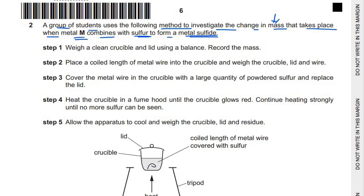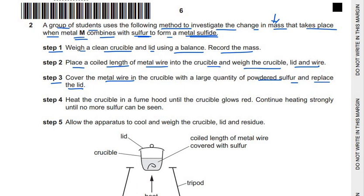Here are the procedure steps. Step 1: weigh a clean crucible and lid using a balance and record the mass. Step 2: place a coiled length of metal wire into the crucible and weigh the crucible, lid and wire. Step 3: cover the metal wire with a large quantity of powdered sulfur and replace the lid. Step 4: heat the crucible in a fume hood until it glows red, continuing until no more sulfur can be seen. Then allow the apparatus to cool and weigh the crucible, lid and residue.